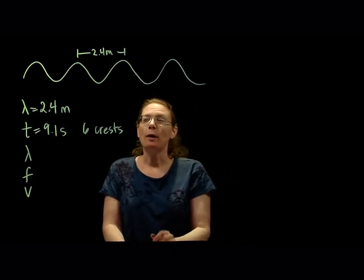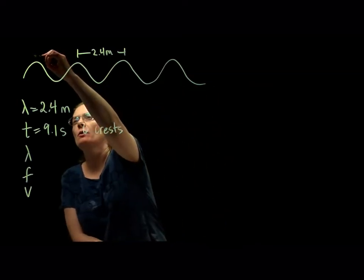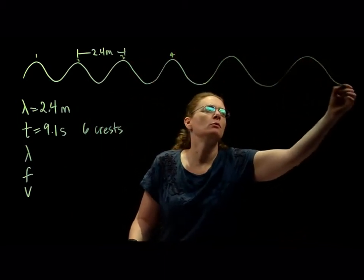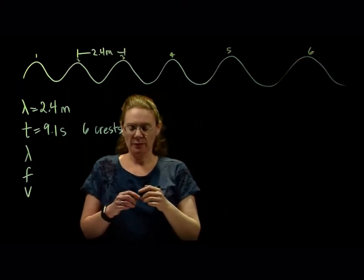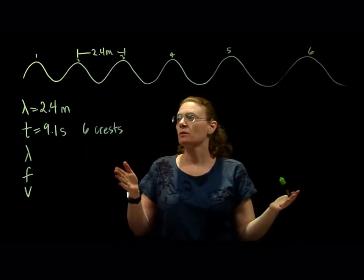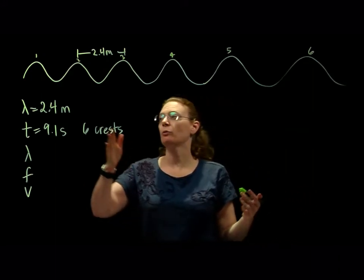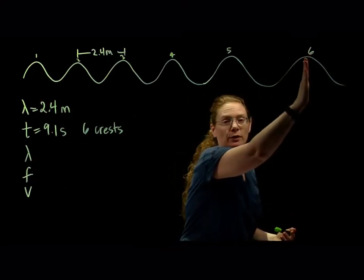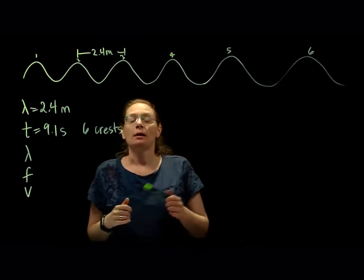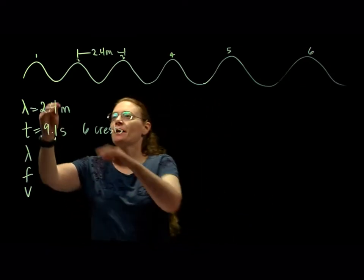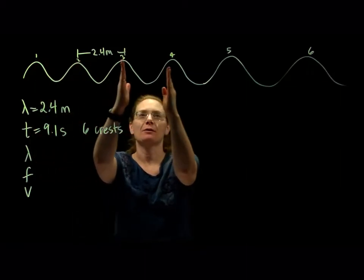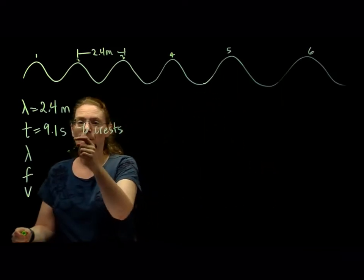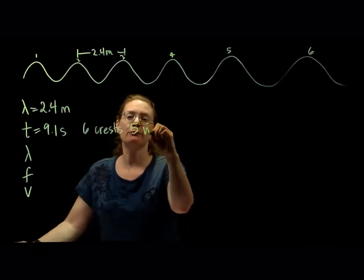Now if 6 crests go by in 9.1 seconds, let's think carefully. Exactly 6 went by in 9.1 seconds. Here is one full wave, here's our second, third, fourth, fifth — this is only 5 waves. So it's 6 crests, but it's 5 full waves.